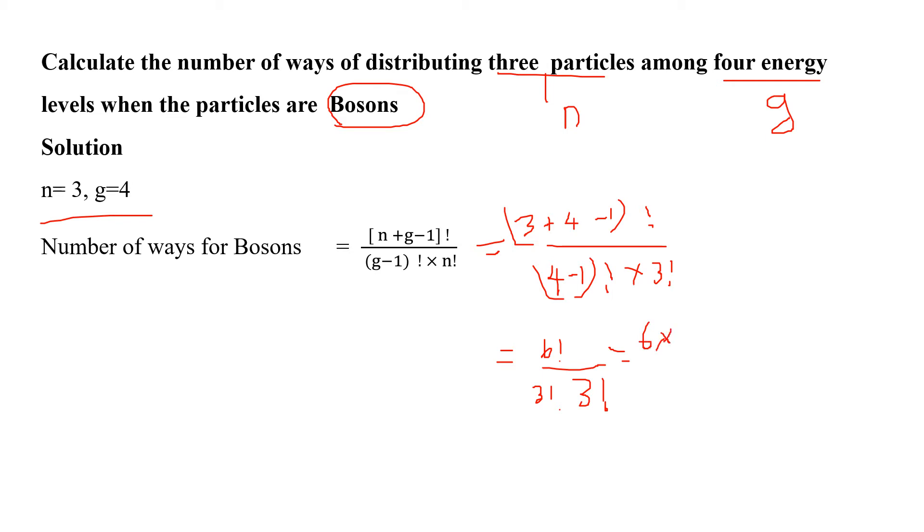The 3 factorials cancel out. After simplification, we get 20. So the number of ways for bosons is 20, which is the correct answer. This is a simple problem where you use the formula, substitute values, and solve.